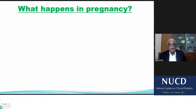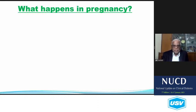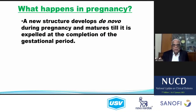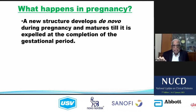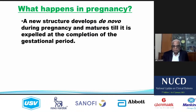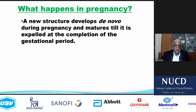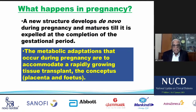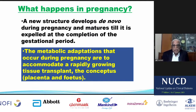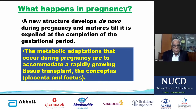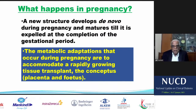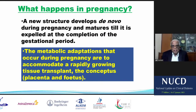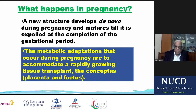What happens in pregnancy? A new structure develops de novo during pregnancy and matures until it is expelled at the completion of the gestational period. During this time, metabolic adaptations occur to accommodate a rapidly growing tissue transplant — it is called a transplant because it is going to come out again. This refers to the conceptus: the placenta and the fetus, known as the conceptus.